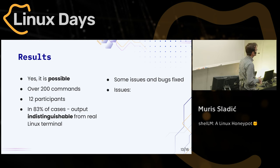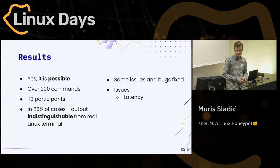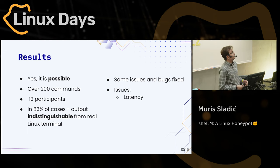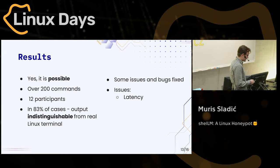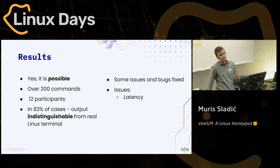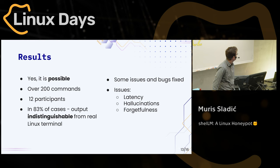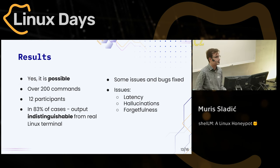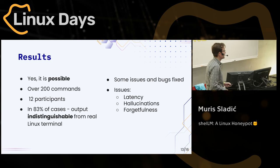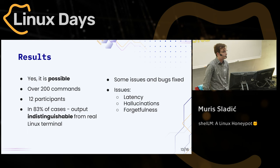Some issues you can encounter with this are latency, as you might have noticed especially at the beginning of the presentation. That doesn't necessarily have to be a problem, because IoT devices are sometimes a bit less responsive, or it could be some distant server or IoT device somewhere. But it's definitely something due to the language model technology. Of course, there are hallucinations and forgetfulness — though we didn't have too much problem with hallucinations here. The forgetfulness of the model is when its working memory gets too big and it tends to forget certain things it did early on, but it's something we're working on and finding solutions for.